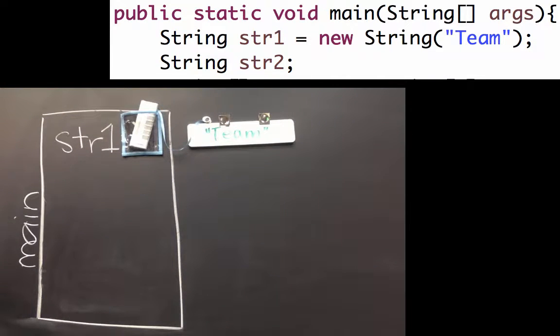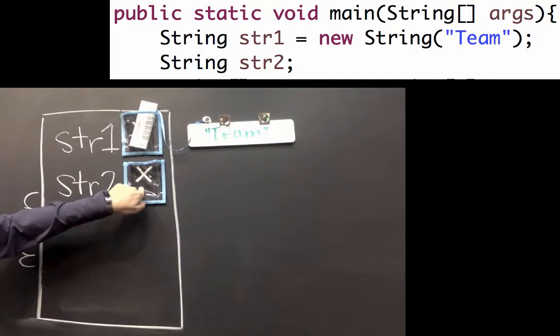When we create str2 and don't give it a value, we just get one of these null references. So now it's not referencing any strings. It's just null.